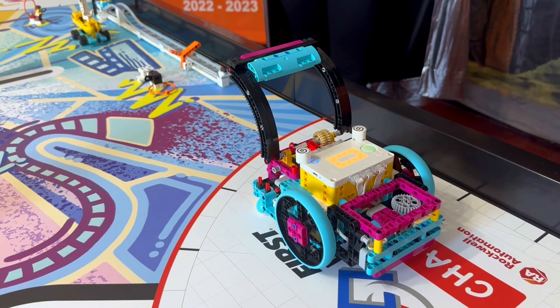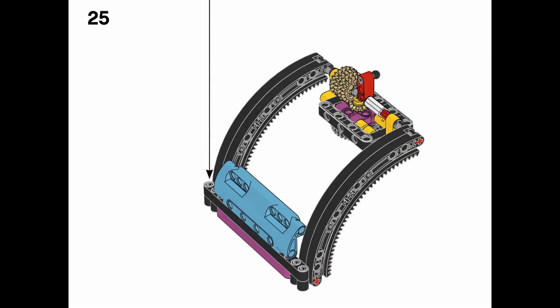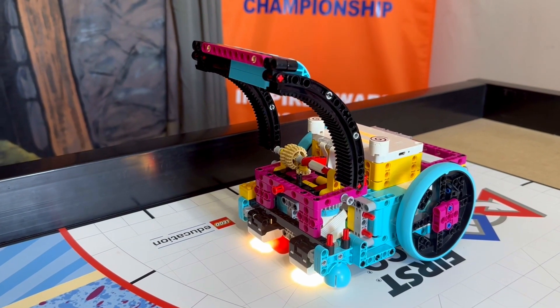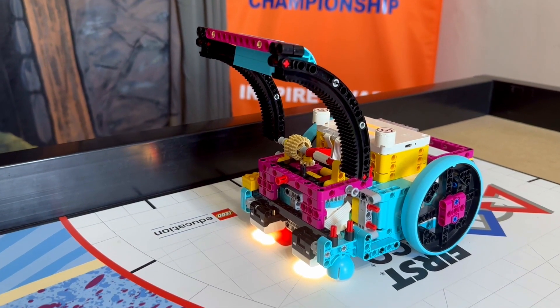For this mission, we used one of the basic attachments that the Spike Prime Kit shows you how to build. We used the dozer blade. We used this attachment because it is perfect for grabbing onto the rolling camera and bringing it where we wanted.